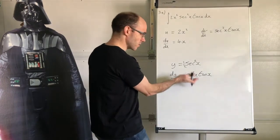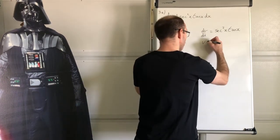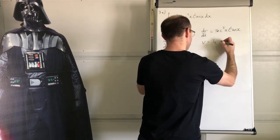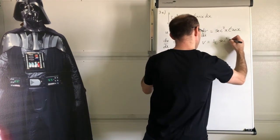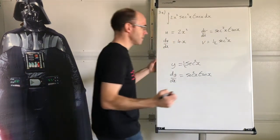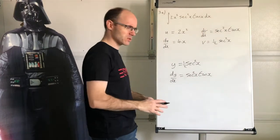So in reverse, the integral of that is this. So v equals one half sec squared x, and that's it. See? Lovely. Not scary. Lovely.